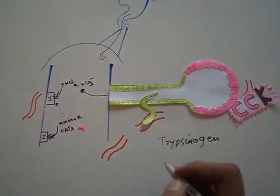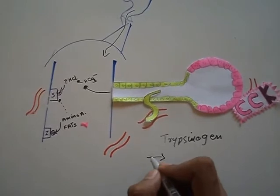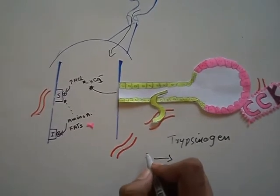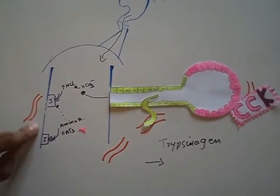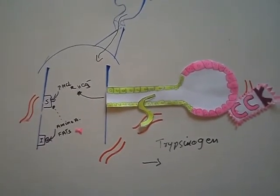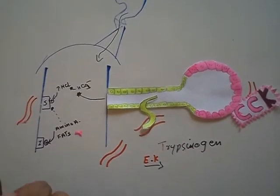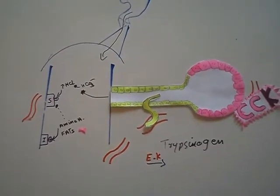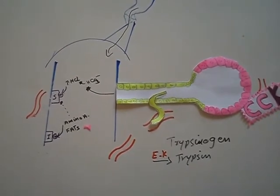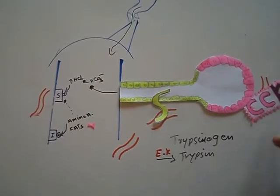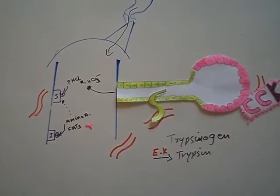The trypsinogen will be converted to trypsin through enterokinase, which is present here in the duodenum. Specialized cells will produce the enterokinase to convert the trypsinogen into trypsin. Trypsin will convert the rest of enzymes coming from the acinus, which is known as autocatalysis.